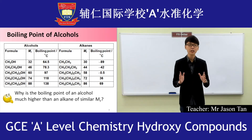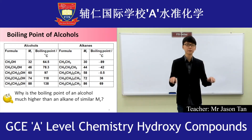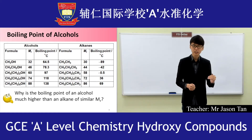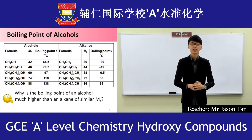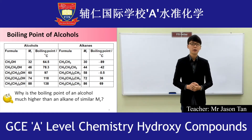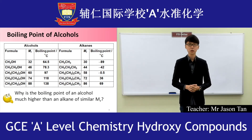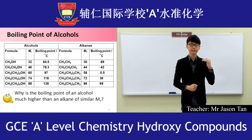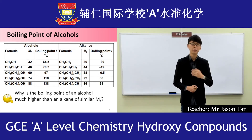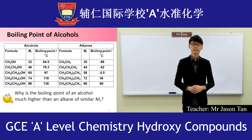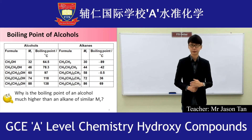Now we will discuss the boiling points of alcohols. In the table shown, there is a list of alcohols and a list of alkanes. Generally, alcohols have higher boiling points than alkanes. You can see that as the alcohol chain grows longer — from methanol to ethanol to propanol — the boiling point increases. Similarly, when the alkane grows longer in chain, the boiling point also increases.